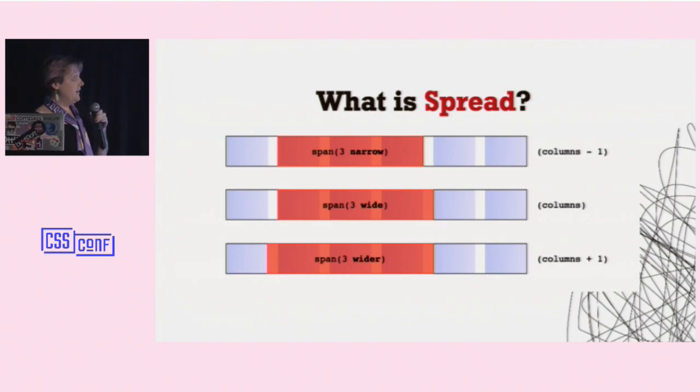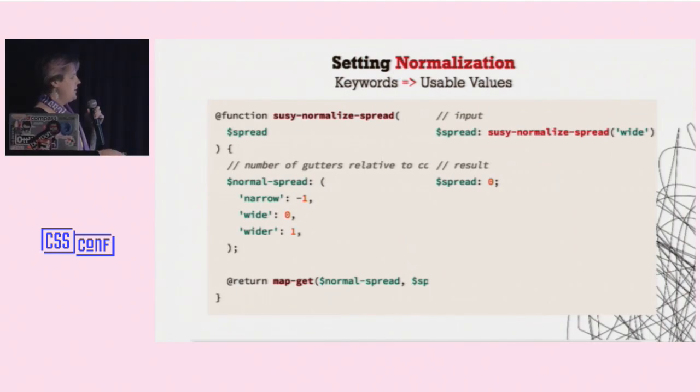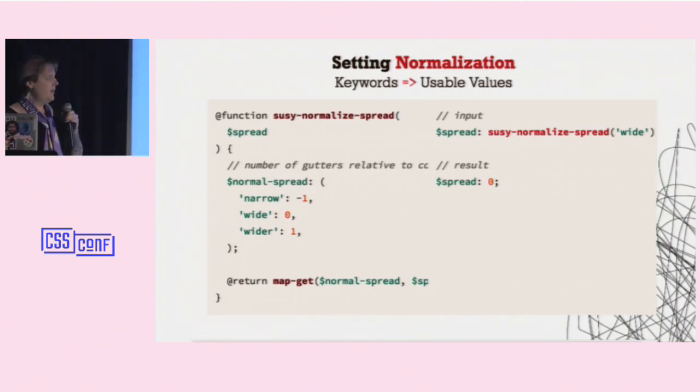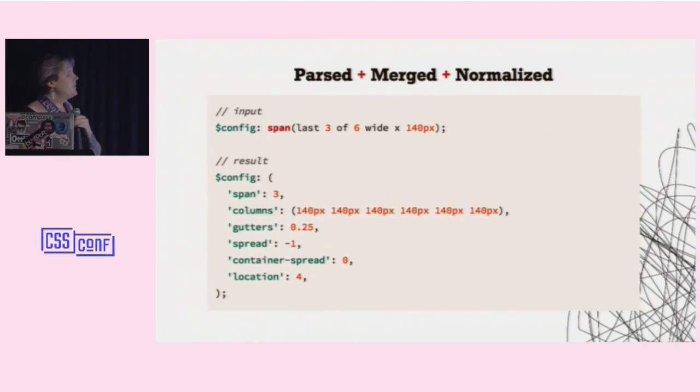If you're wondering what spread is, I've got it here. Spread is the fact that when I say span 3, you don't know whether to include that gutter or this gutter. So we've got narrow, wide, and wider as options. So the next step that we need to do is normalize it because spread is actually how many gutters do we have in relation to our span or in relation to our columns. So we want narrow to mean minus 1. We want wide to mean 0. And we want wider to mean 1. So, again, we've already parsed out that the spread is wider. Now we want to know what does wider mean. And, again, we use a map to grab that value and return it. I guess I've got some overflow issues here. Sorry about that.